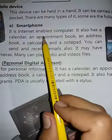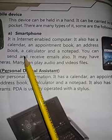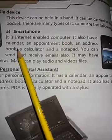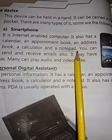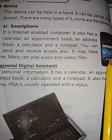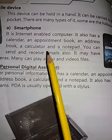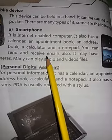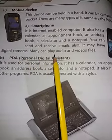Smartphone ہمارے پاس — it is an internet-enabled computer. It also has a calendar, appointment book, address book, calculator, and a notepad۔ آپ اس میں email send بھی کر سکتے ہیں اور receive بھی کر سکتے ہیں۔ It may have a digital camera، اور many smartphones can play audio and video files بھی۔